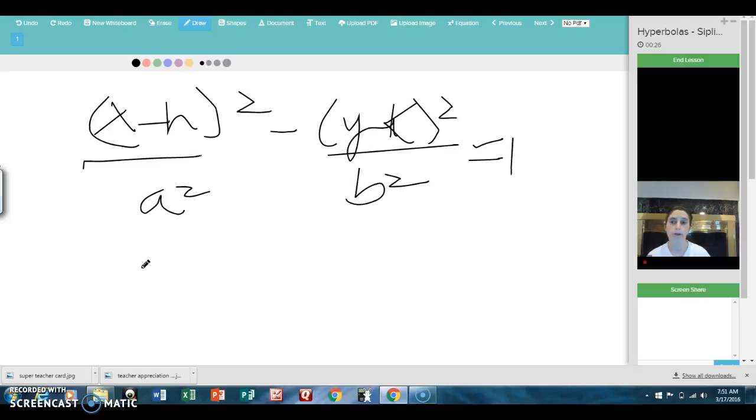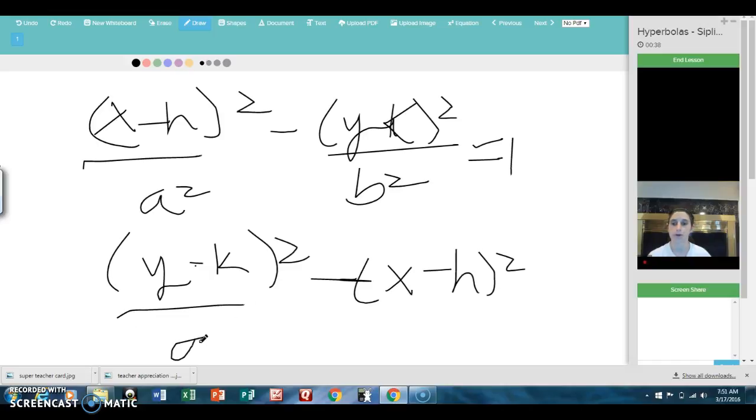it's going to open along the x-axis direction, as opposed to something like this, where the y term is first, that's going to open along the y-axis direction. You'll notice that, different from an ellipse, the a's and the b's don't switch order. What switches order is the x and the y.